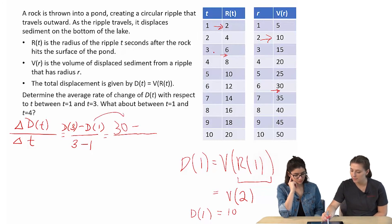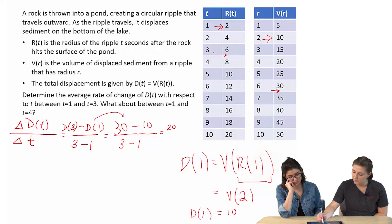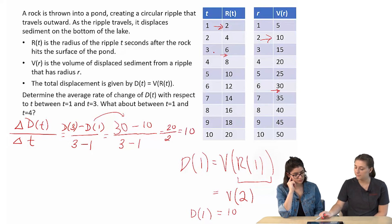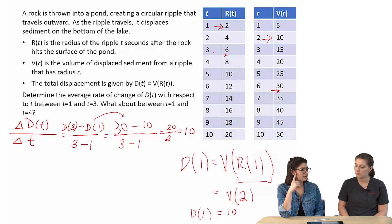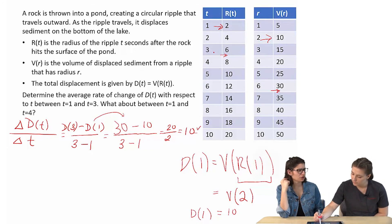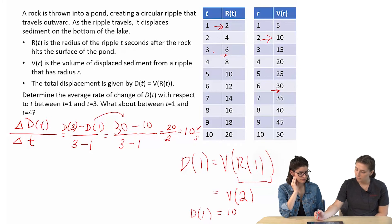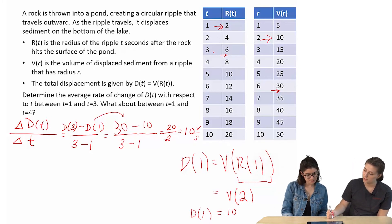So we can plug that in there. So then 30 minus 10, and 3 minus 1. We get 20 over 2. We get 10. Okay. So that would be 10 volume per second, so whatever the volume is per second. Okay. So it's changing by 10 every second, or the volume is changing by 10 every second. Right? Yeah. The displacement.